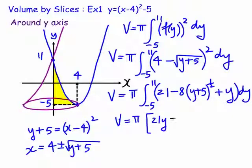Now we have a 8 divided by 3 on 2, so it's 16 on 3, lots of y plus 5 to the power of 3 on 2, and then a y squared on 2. Now we have to evaluate this between minus 5 and 11.